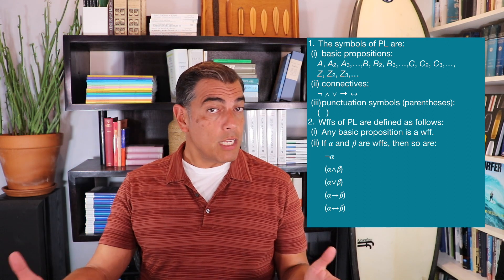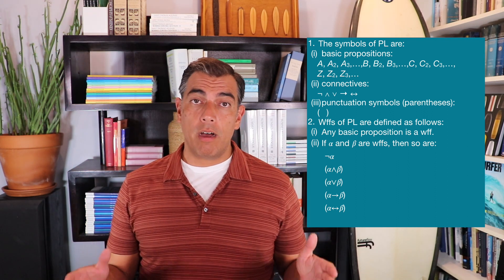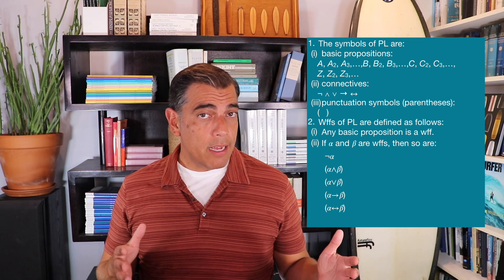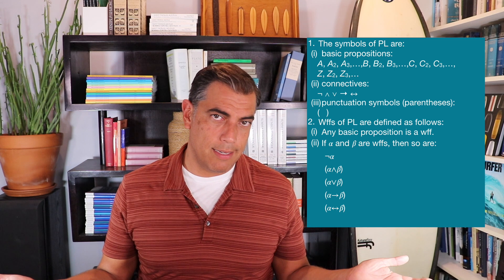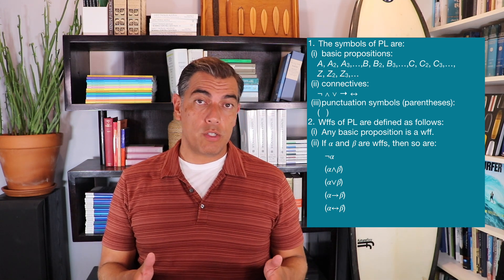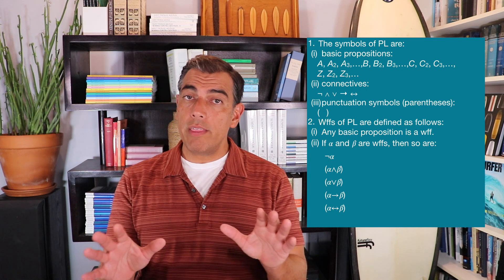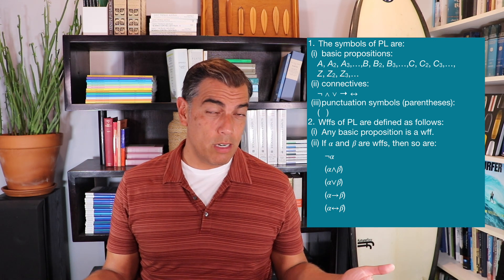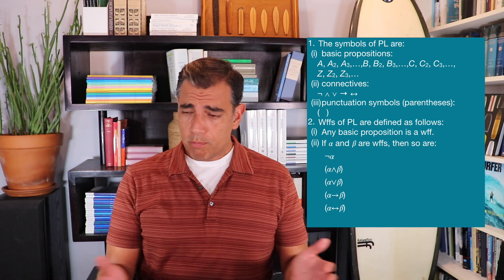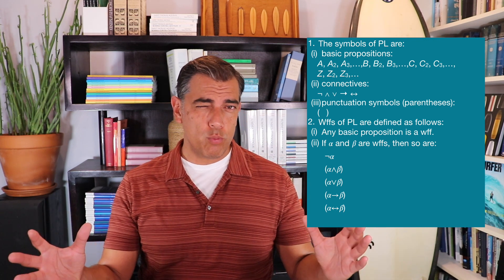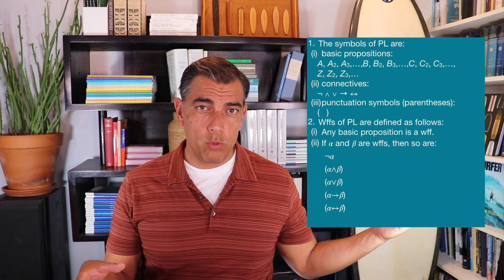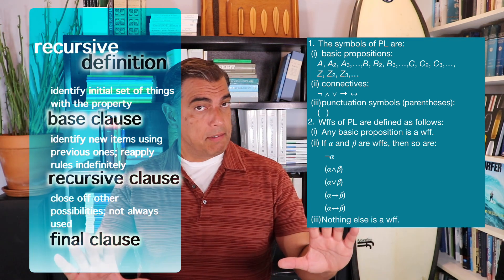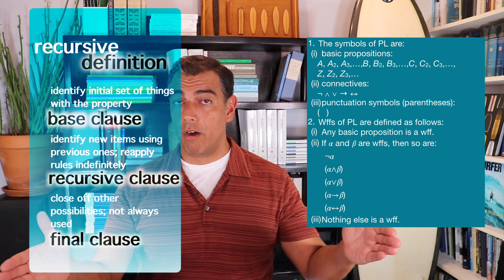Our recursive clause — the successor rule — states: if alpha and beta are well-formed formulas, then so are not-alpha, (alpha and beta), (alpha or beta), (alpha arrow beta), and (alpha double-arrow beta). Using the first two clauses we identify only things that are well-formed formulas. But to ensure we capture all of them and exclude everything else, we add a final clause: nothing else is a well-formed formula. Just that easy — we cut off all possibilities outside of the ones we've already made.